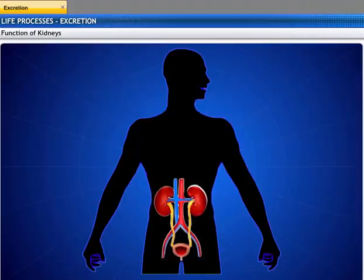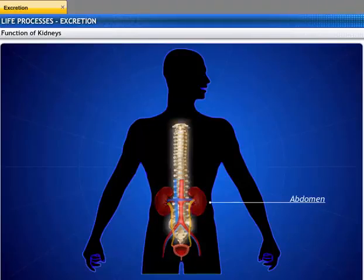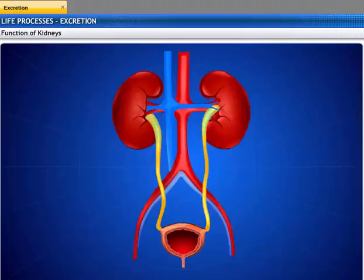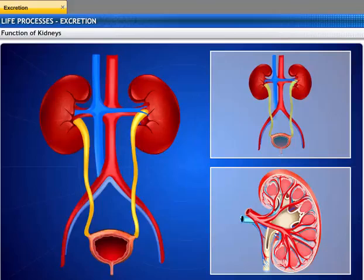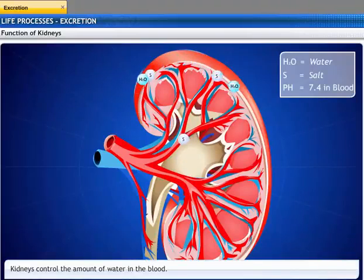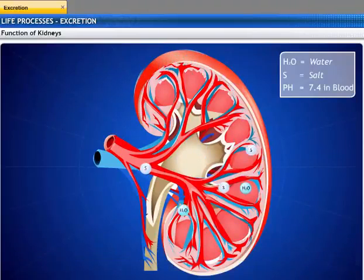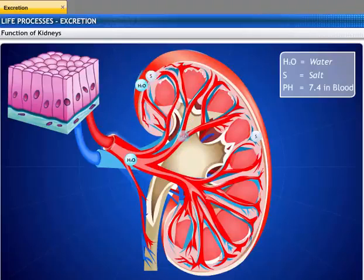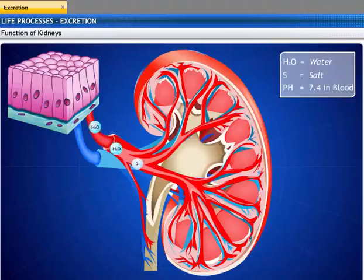The kidneys are located in the abdomen, one on either side of the backbone. The kidneys perform several crucial functions — they excrete water, salts, and urea in the form of urine. They control the amount of water in the blood and maintain the level of body fluids by regulating salt concentration. If this did not happen, the osmosis or movement of water between body cells and blood would be hampered. Kidneys also maintain the blood pH at 7.4.